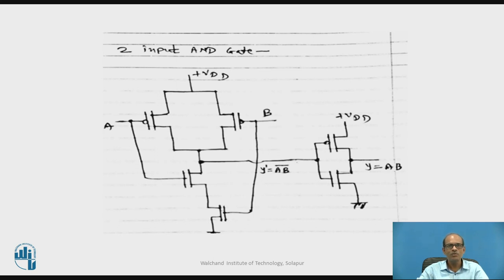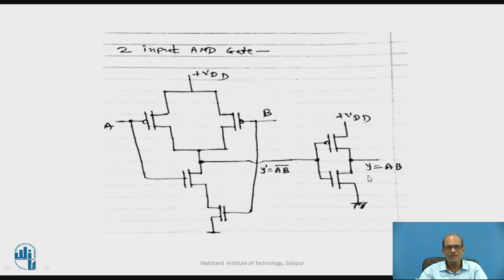Let us implement a two-input AND gate using CMOS logic. We take the two-input NAND gate as drawn, whose output Y' equals AB bar. Passing this through a CMOS inverter inverts the output, giving Y equals AB — this is the two-input AND gate. Similarly, a two-input OR gate can be designed by using the two-input NOR gate followed by a CMOS inverter.